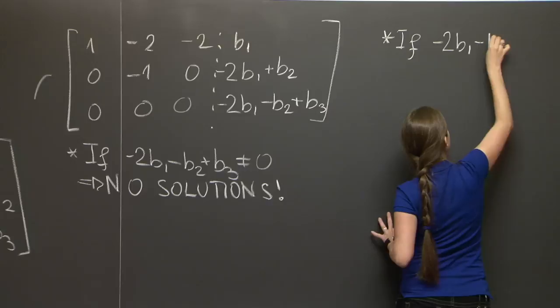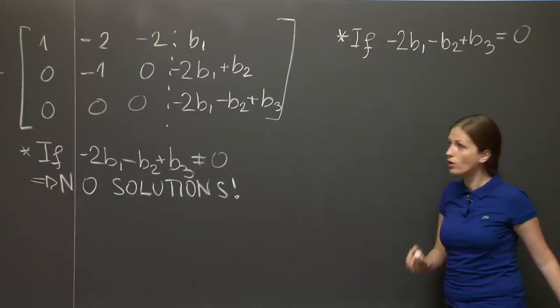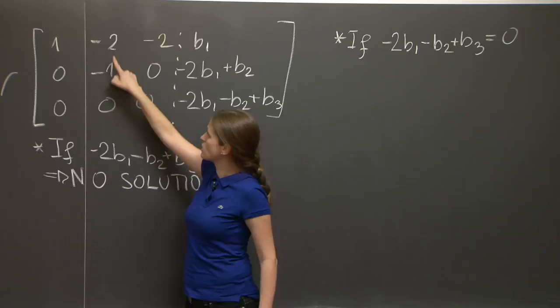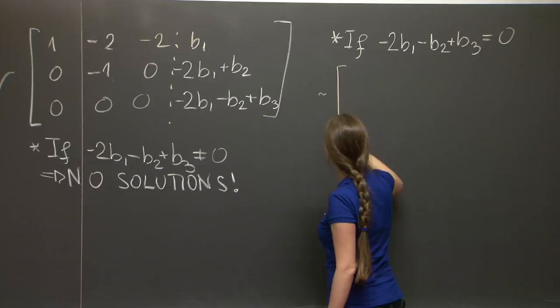If this is equal to 0, so minus 2 b1 minus b2 plus b3 is equal to 0, then let's do one more step on this matrix here. Let's turn this number into 1 by multiplying this row by negative 1, and let's use it to eliminate this number here as well.